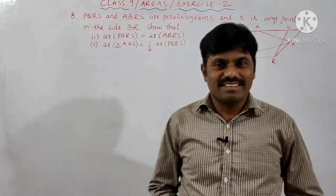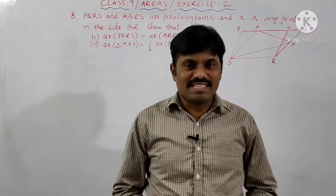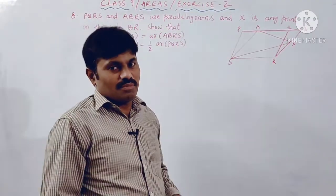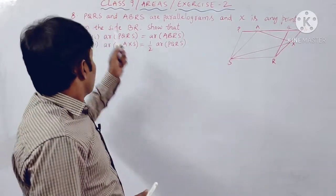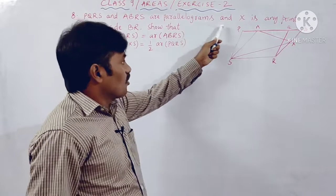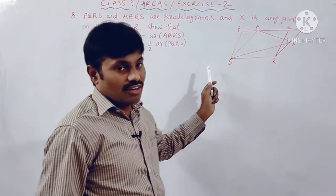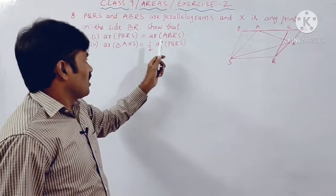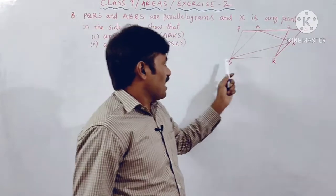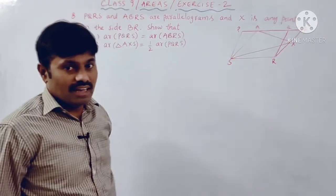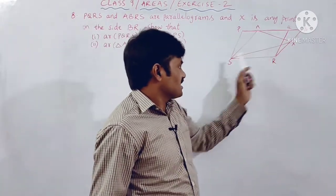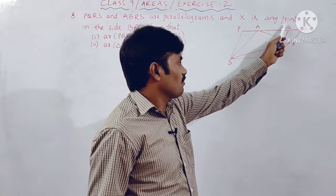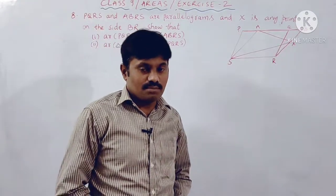Hi guys, welcome back to my channel. In this video lecture we are going to discuss problems in Exercise 11.2, that is questions 8 to 10. We will discuss question number 8: PQRS and ABRS are two parallelograms given in this figure, and X is any point on the side BR. We have to show that area of parallelogram PQRS equals area of parallelogram ABRS, and area of triangle AXS is equal to half of the area of parallelogram PQRS.